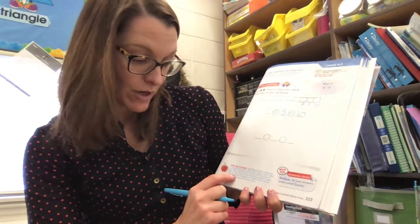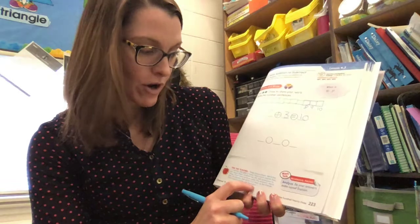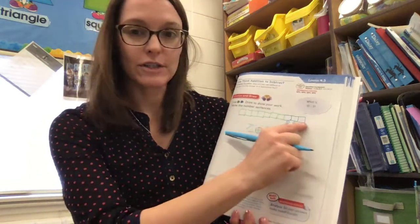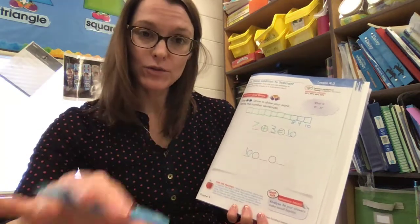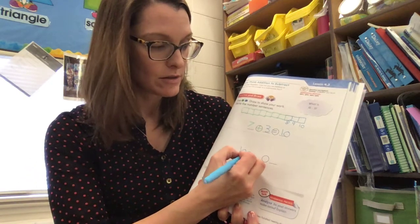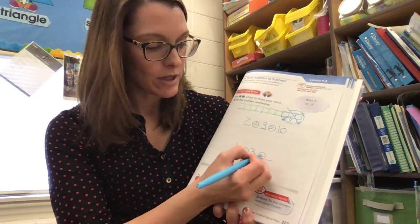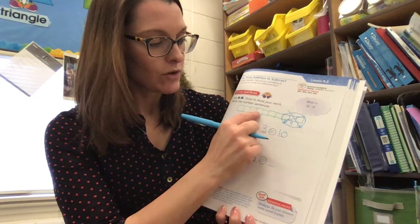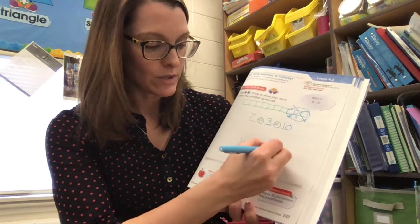Maria has ten crayons. She gives three of them to her friends. How many crayons are there now? So now she starts with all ten crayons, and we already drew ten cubes up here. She's giving crayons away, so that means she's going to end up with a smaller number — that's subtraction. It said she gave three away, so let's circle these three blue crayons and cross them out. Ten take away three equals one, two, three, four, five, six, seven. Ten take away three equals seven.